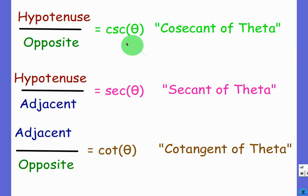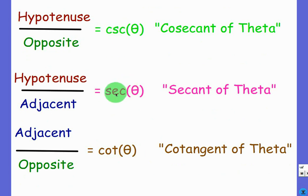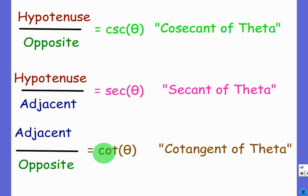One thing that's confusing: sine starts with an S, but its reciprocal — cosecant — actually starts with a C, written csc. And cosine starts with a C, but its reciprocal — secant — starts with an S, written sec. When I first learned these, I kept thinking secant was the inverse of sine because it starts with an S, but it's not. The C's and S's alternate, so just be careful with that.